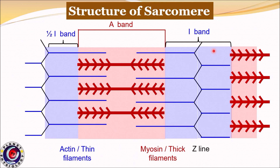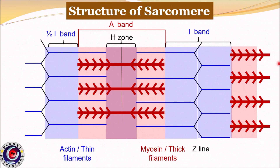The central part of the A-band is a little lighter in color and is called the H-zone. This is the part of the myosin filament without overlapping actin filaments. In the center of the H-zone is a thin dark line called the M-line. This M-line is the site for reversal of polarity of myosin molecules. Slender cross connections of the M-line hold thick filaments in proper position.